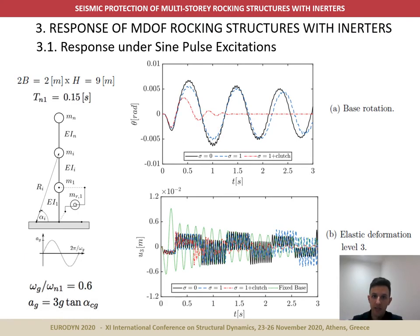After validating the numerical models against experimental and analytical results, the response of multi-degree-of-freedom structures with and without inertors was compared under assigned pulse excitations. A three-level system representative of a broken wall of dimensions 2 meters by 9 meters was used as an example. The figures show that although the inclusion of the inertor reduces the maximum base rotation, it can also cause slight increases in the amplitude of the elastic deformations of higher stories due to the backstay effect caused by the connection of the inertor at the first level. Nevertheless, in all three stories, the peak deformation remains considerably smaller than in the fixed base case.